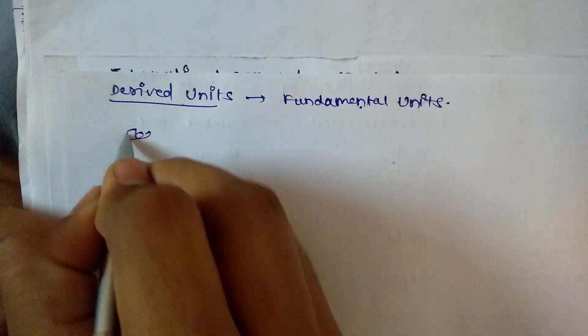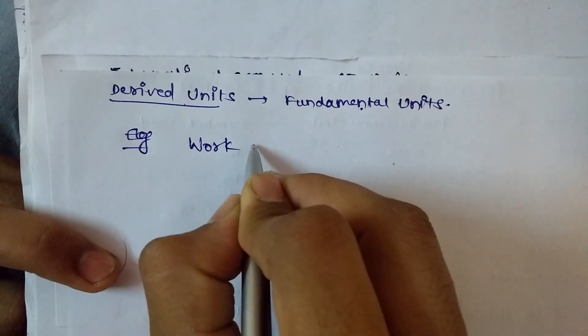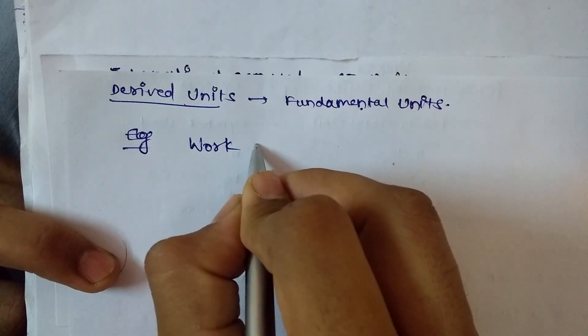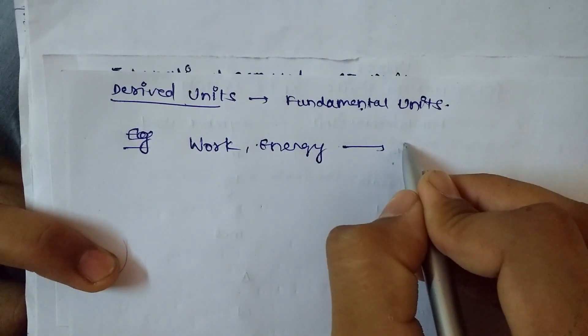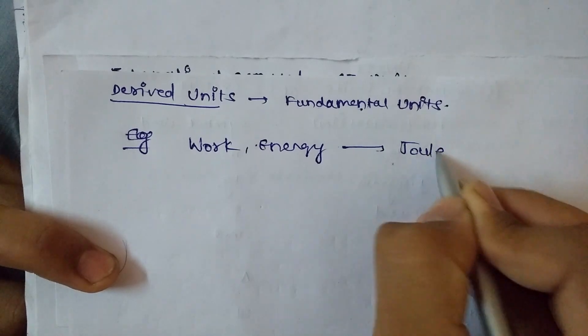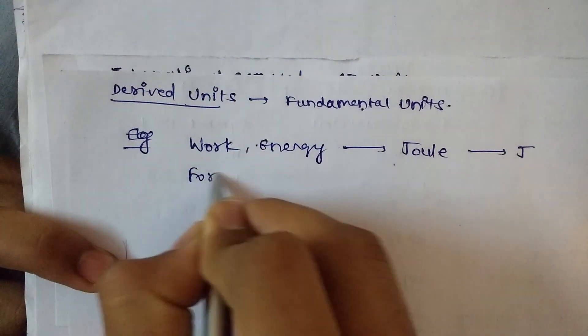We can take examples. The first derived unit is work or energy, as both have the same unit, which is joule with symbol J. The second example is force, whose SI unit is newton with symbol N.